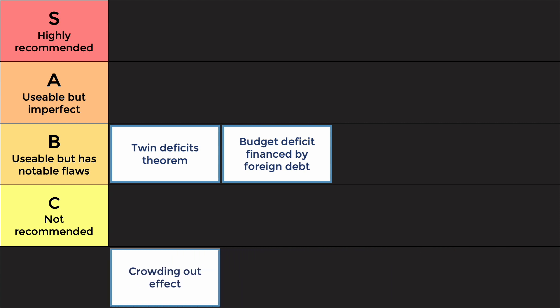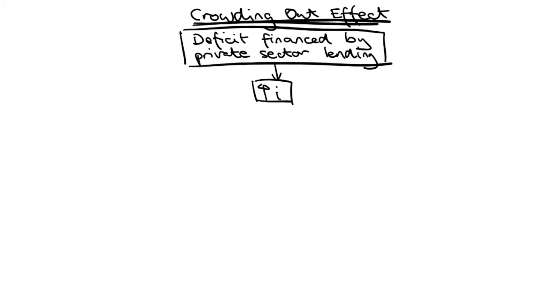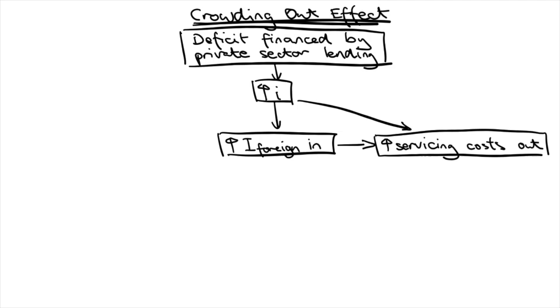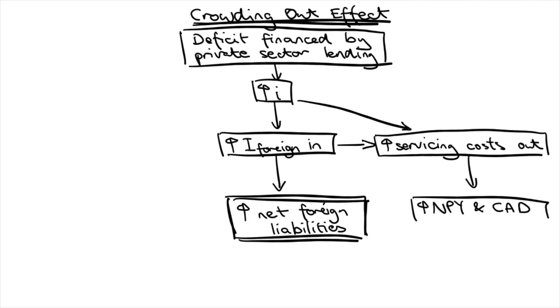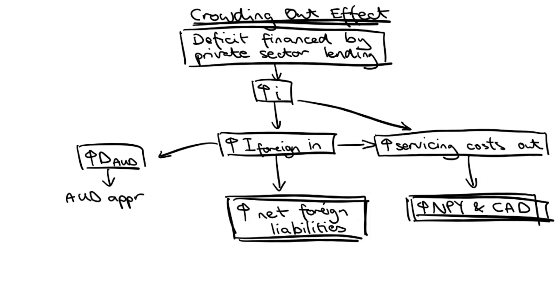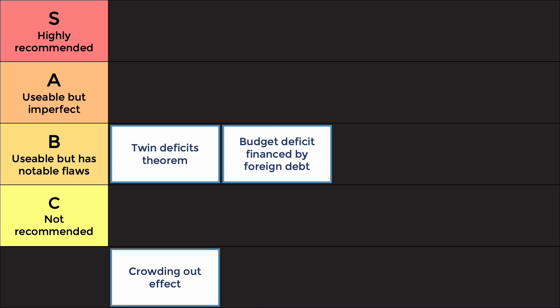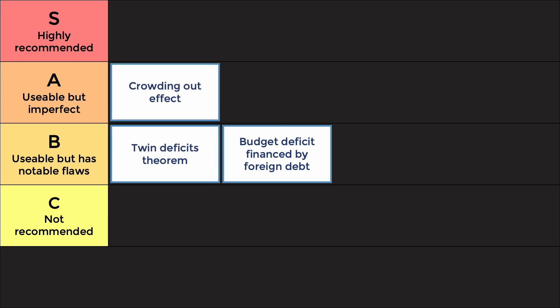Another common argument is the crowding out effect — when a budget deficit is financed by private sector lending, subsequently decreasing the money supply in the private sector. This results in higher interest rates, which attract more foreign debt inflows and incur more servicing costs, increasing net foreign liabilities, a greater net primary income outflow, and a worsened current account deficit. These financial outflows also put upward pressure on the Australian dollar and reduce international competitiveness. This goes in A-tier because it's true that the greatest source of government debt is the private sector, and there are some real-world stats on the impacts of increased interest rates. However, there's hardly any evidence of the crowding out effect itself — in fact, interest rates are often the lowest when the economy is weak and fiscal policy is expansionary.